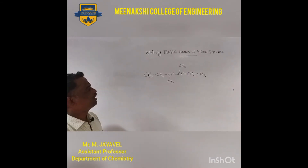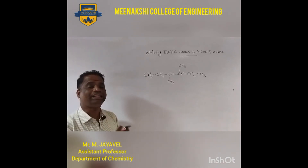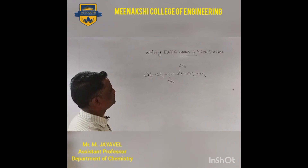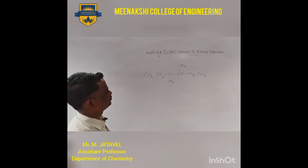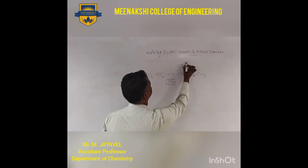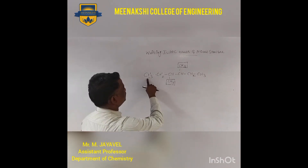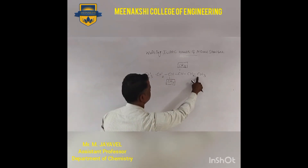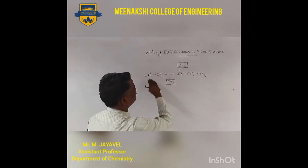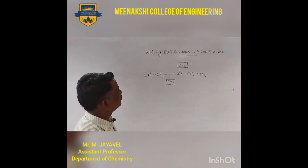Now, another example. Again, we have to find out the continuous longest chain. Here there are two branches — two identical groups. We can start from one end: 1, 2, 3, 4, 5, 6. Starting from the other direction only gives 1, 2, 3, 4 — that is the wrong way. So either this side or that side, we choose based on giving the lowest locants to the substituents. There are two ways of assigning the numbering.